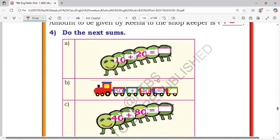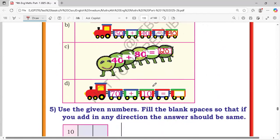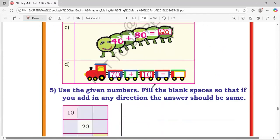Do the next terms. 10 plus 20 means this is 30. 50 plus 40, this is 90. 40 plus 80, this is 120. 70 plus 10, this is 80.